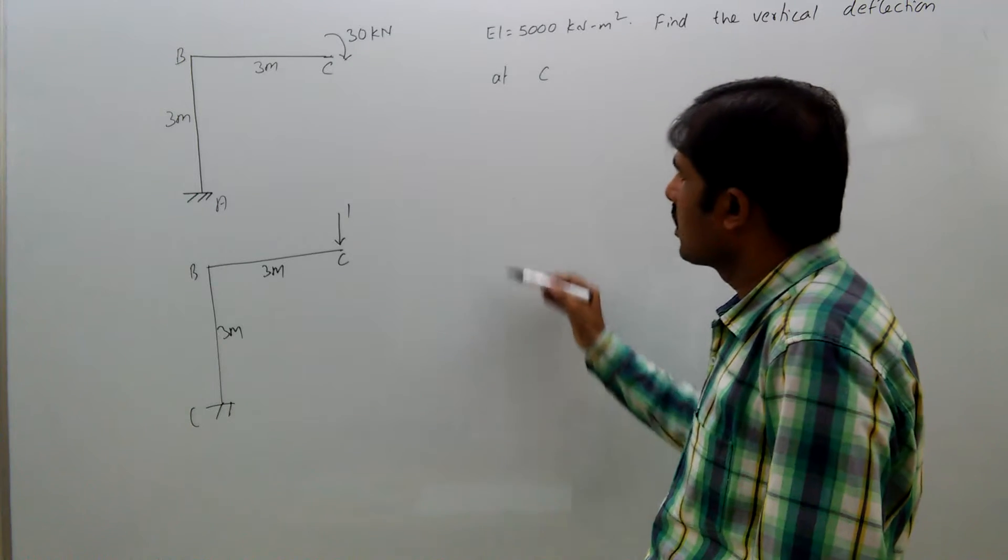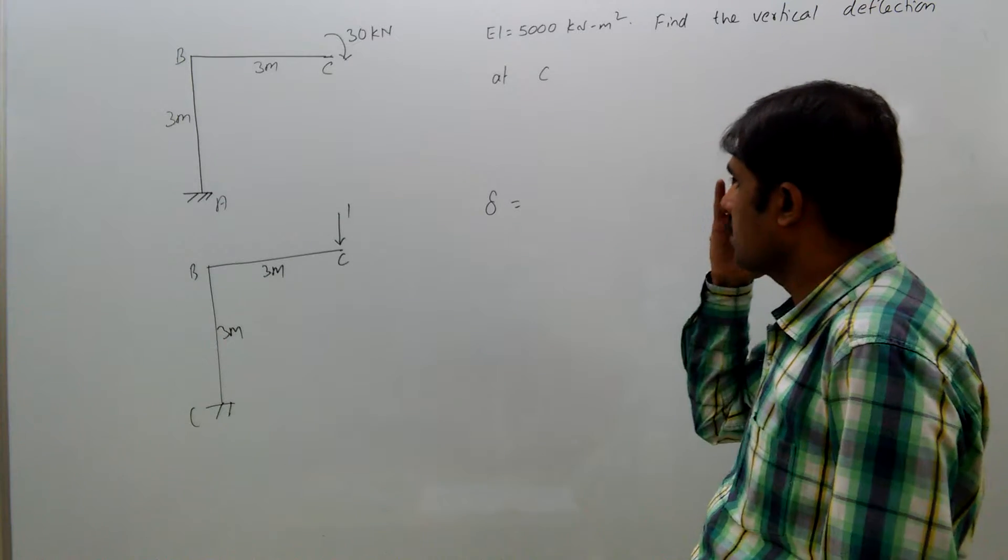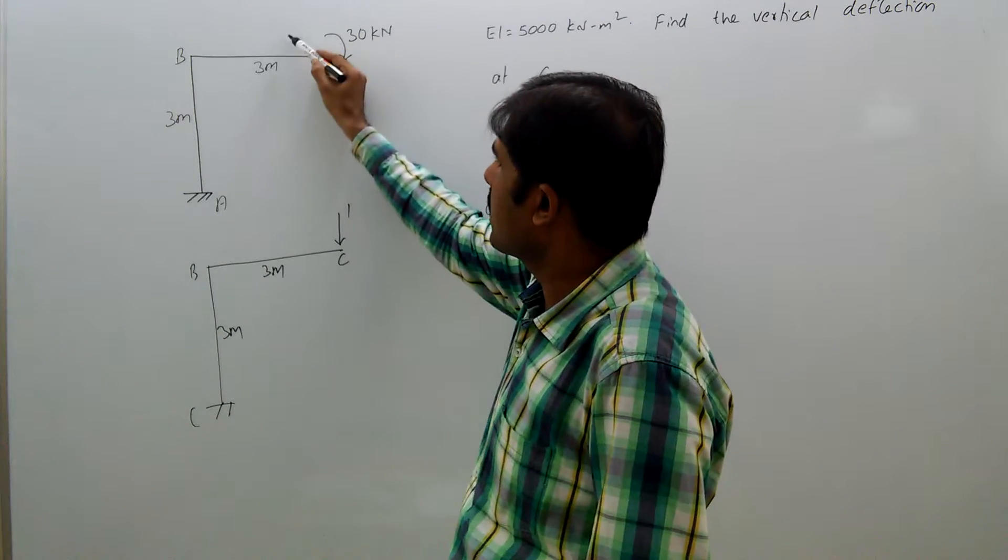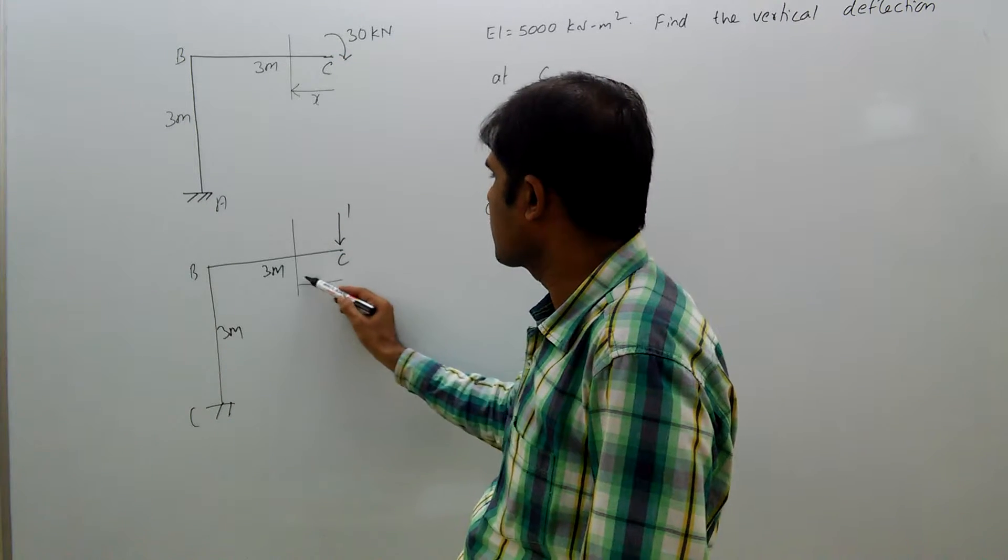Now, delta equal to deflection equal to capital M. In this region you take here x distance, here x distance.